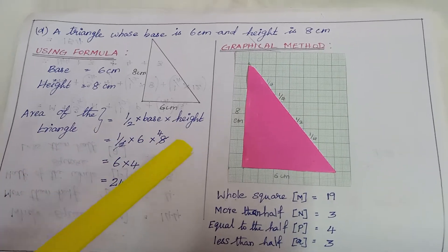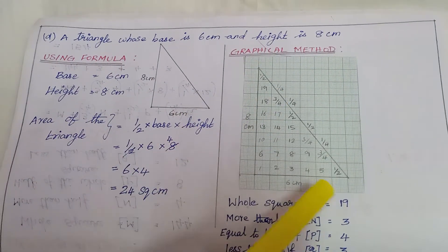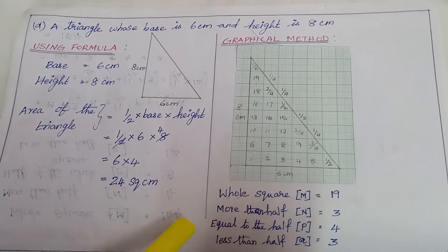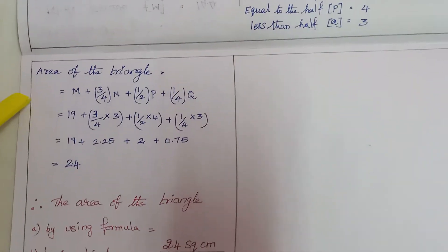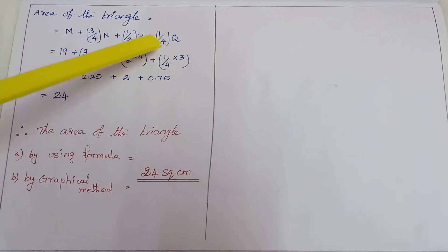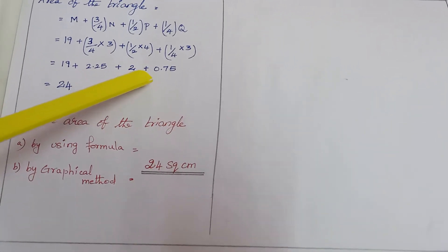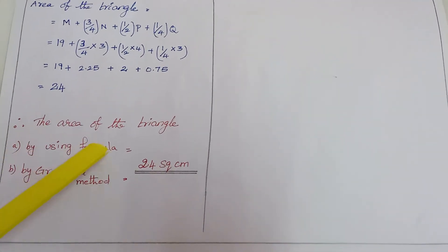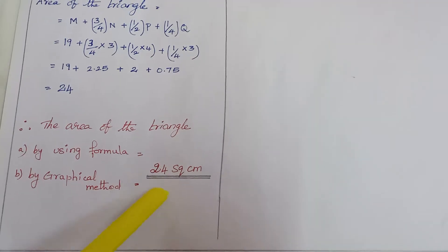In the graphical method, I have drawn a triangle on graph paper. After removing the graph paper, I have allotted numbers for the squares: whole square m = 19, more than half n = 3, equal to half p = 4, less than half q = 3. Therefore, the area of the triangle = m + (3/4)n + (1/2)p + (1/4)q, giving 19 + 2.25 + 2 + 0.75 = 24. Therefore, the area of the triangle by formula and graphical method is 24 square cm.